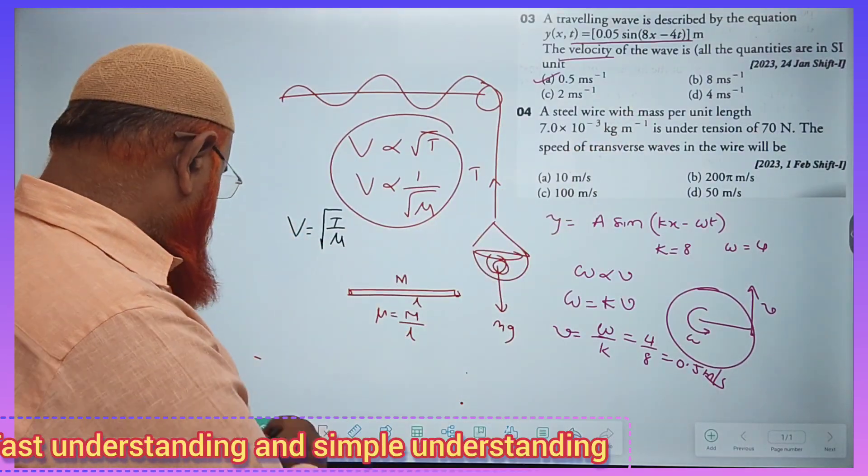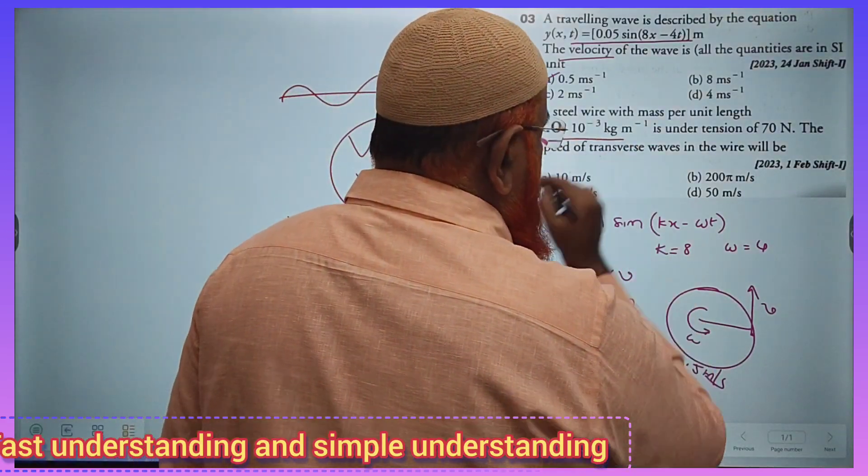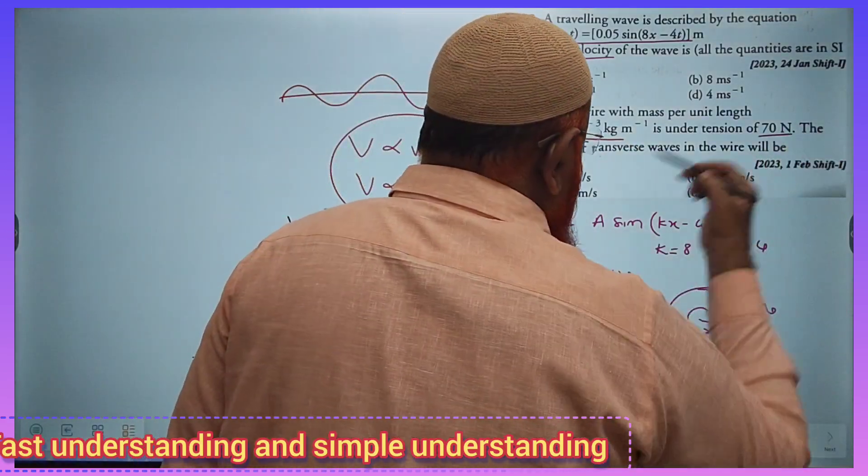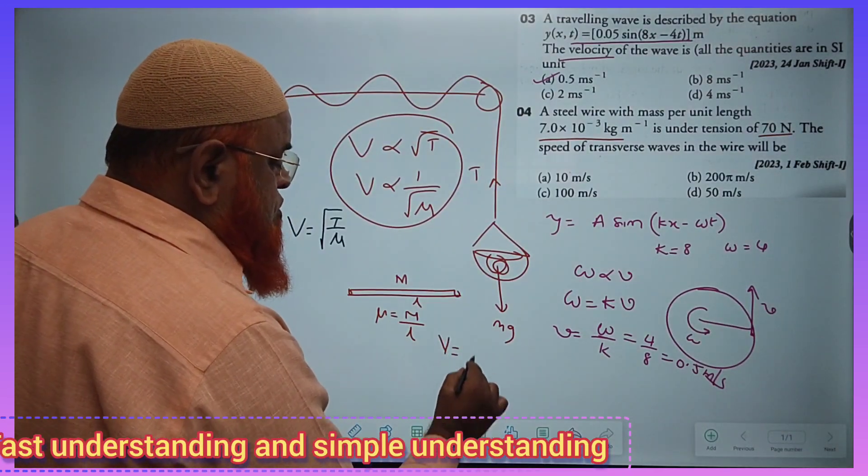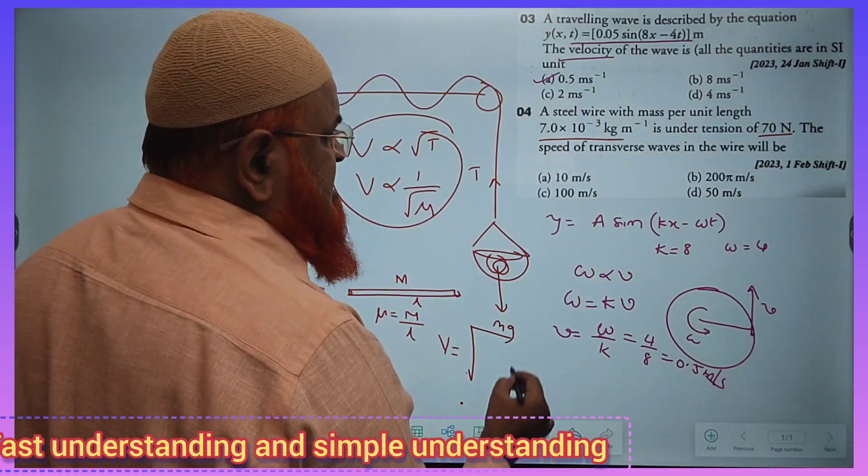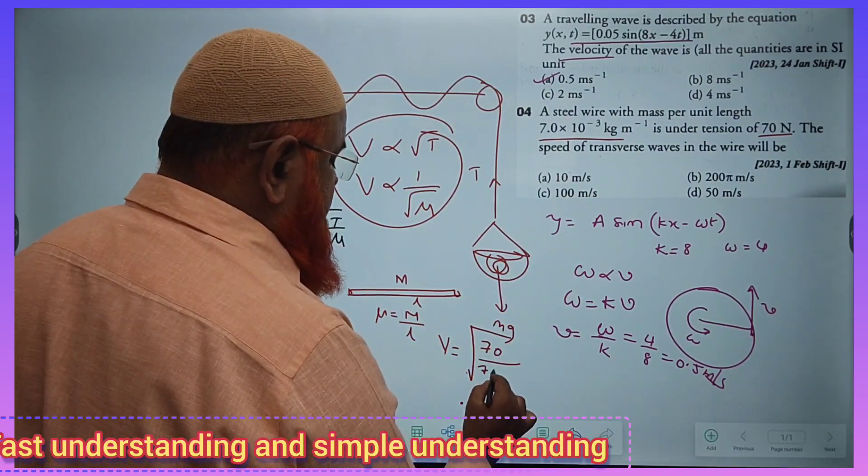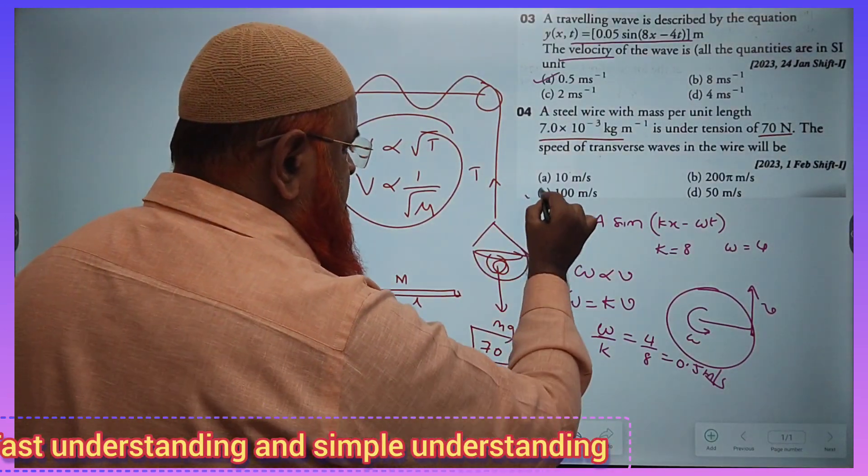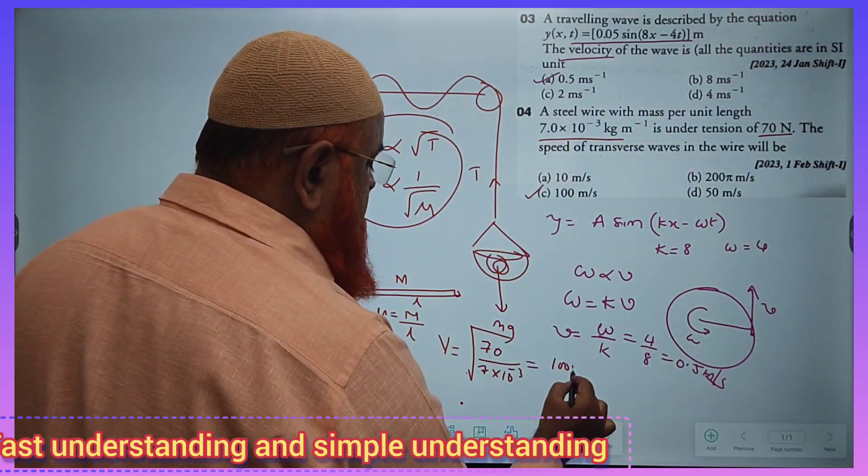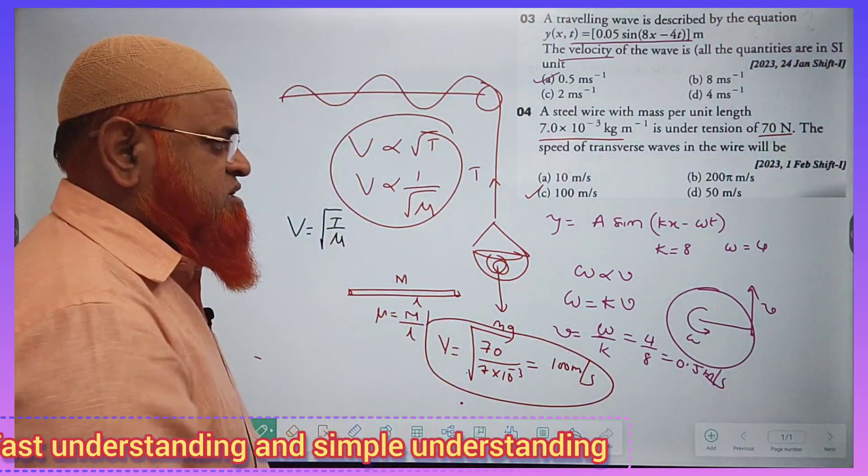Here, it is seen that in the problem, he has given you linear density. He has given you the tension also. A simple method is you can just state V = √T. What is T here? 70. And what is μ here? It is 7 × 10^-3. So if you simplify this one, you will be getting option C, that is 100 meters per second. So this is going to be the answer for this question.